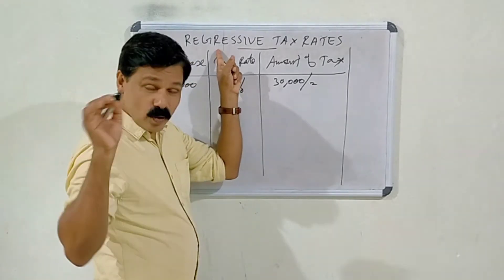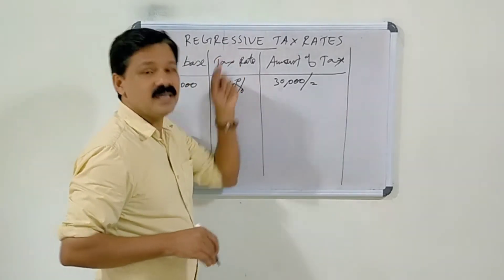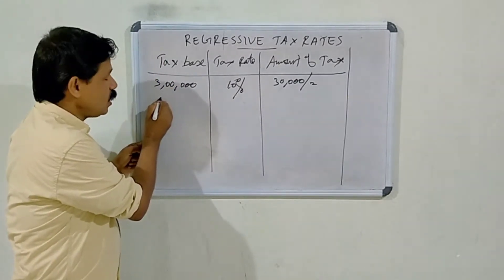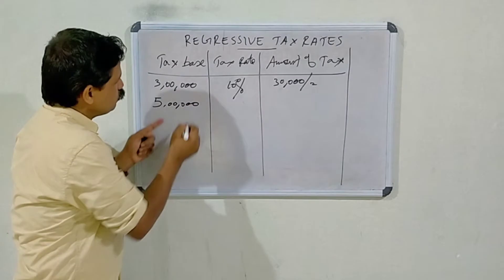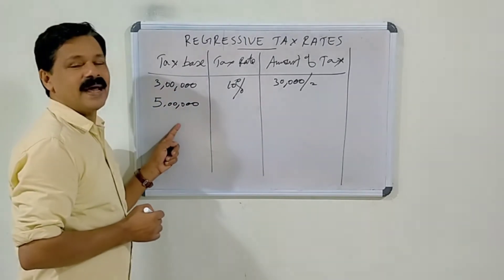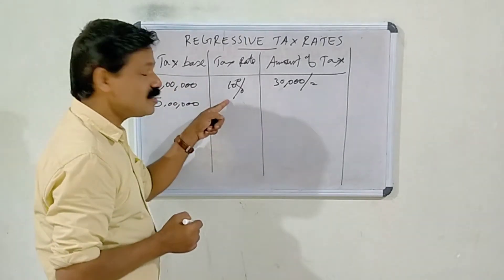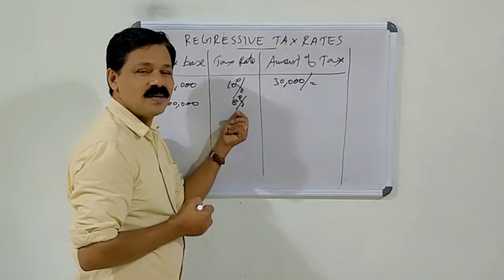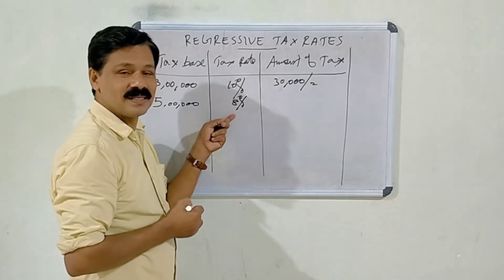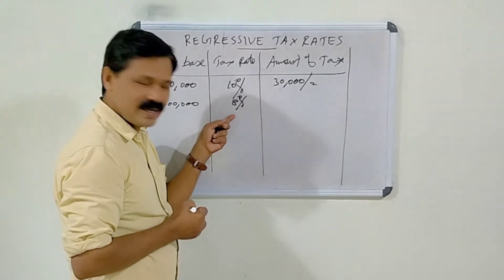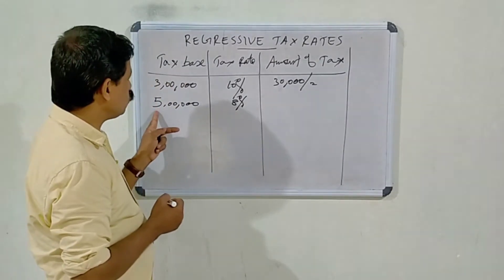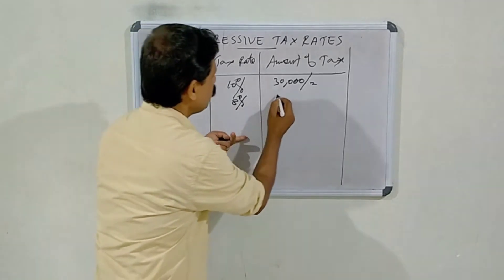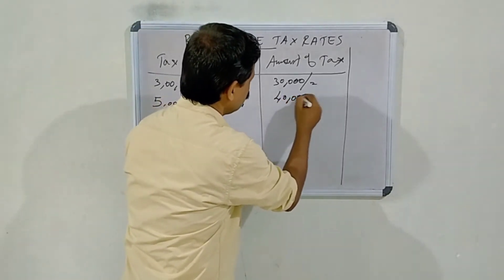If the income tax base increases from 3 lakhs to 5 lakhs, the rate of taxation will be decreased from 10% to 8%. That concerned taxpayer then has to pay 8% of 5 lakhs rupees, that is 40,000 rupees.